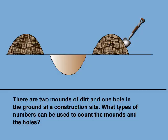There are two mounds of dirt and one hole in the ground at a construction site. What types of numbers can be used to count the mounds and the holes? We could use whole numbers to count 1, 2, 3 items, but that doesn't quite work. These two mounds of dirt are a different thing than this hole in the dirt. We could say there are two mounds of dirt and use two to count the mounds. But what about the hole? Is it zero?